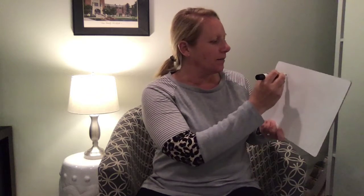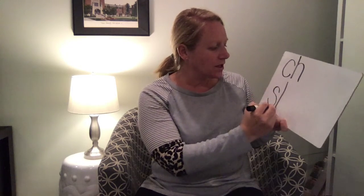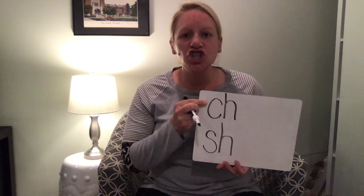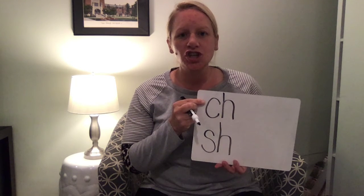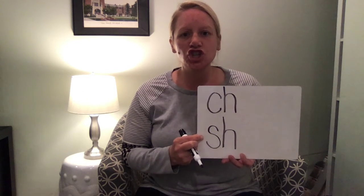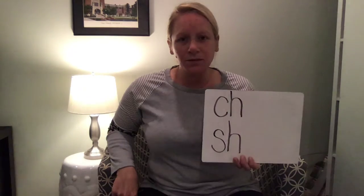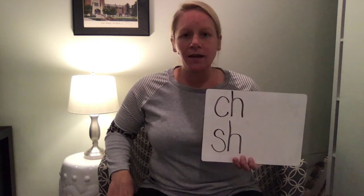The digraphs that I'm talking about are ch — chin — ch, and sh — ship — sh. When I make the ch sound my mouth looks like this: ch. Now you make the ch sound. When I make the sh sound my mouth looks like this: sh. Now you make the sh sound. Notice how your mouth makes the same shape to make both of those digraph sounds. In fact, I can make both sounds one after another without even moving my lips.